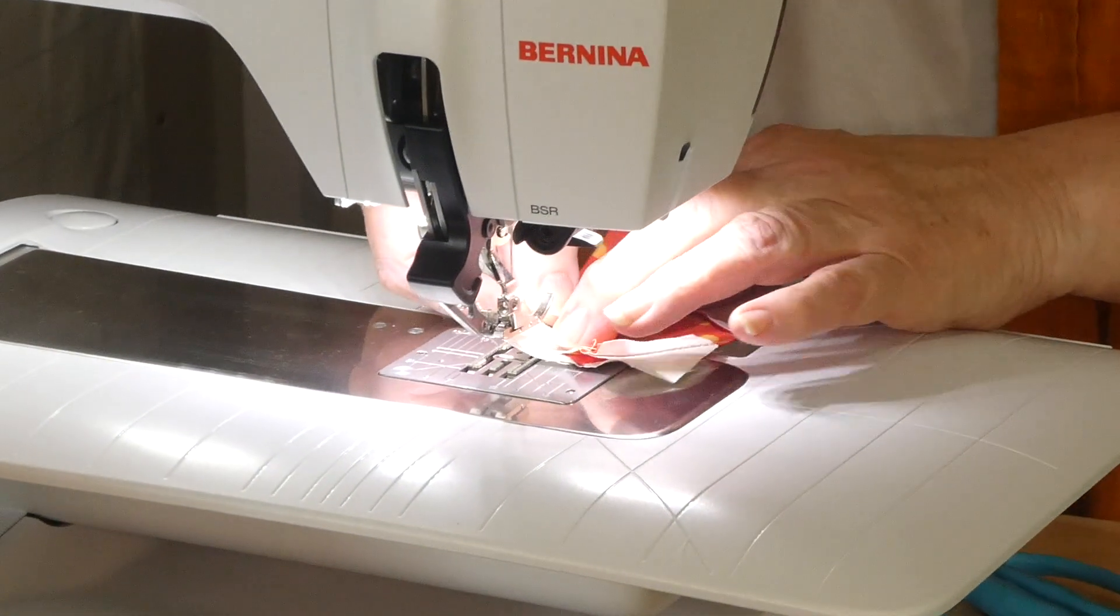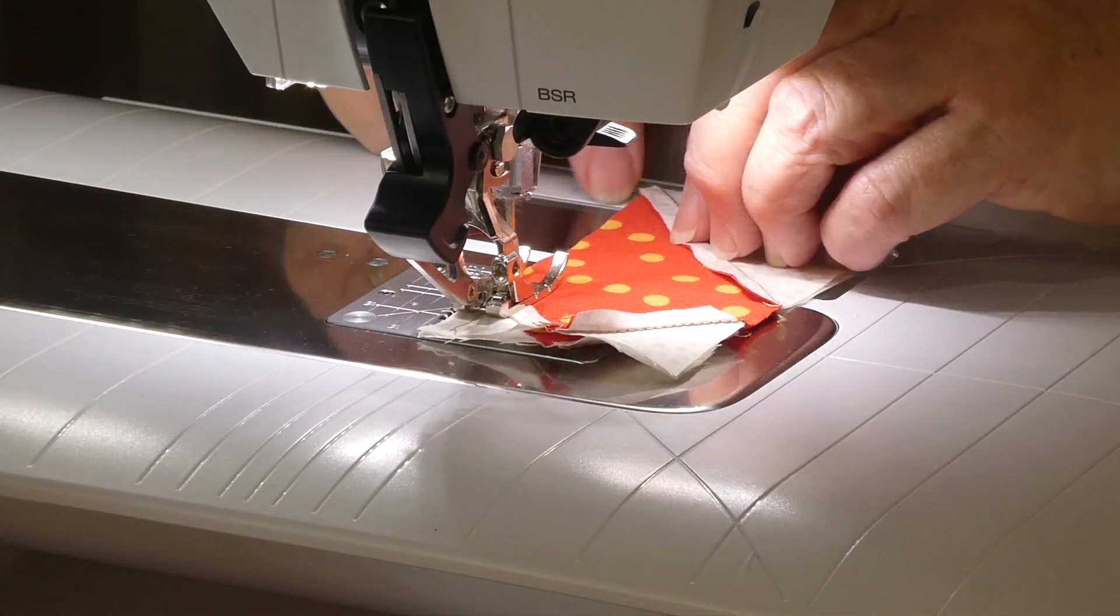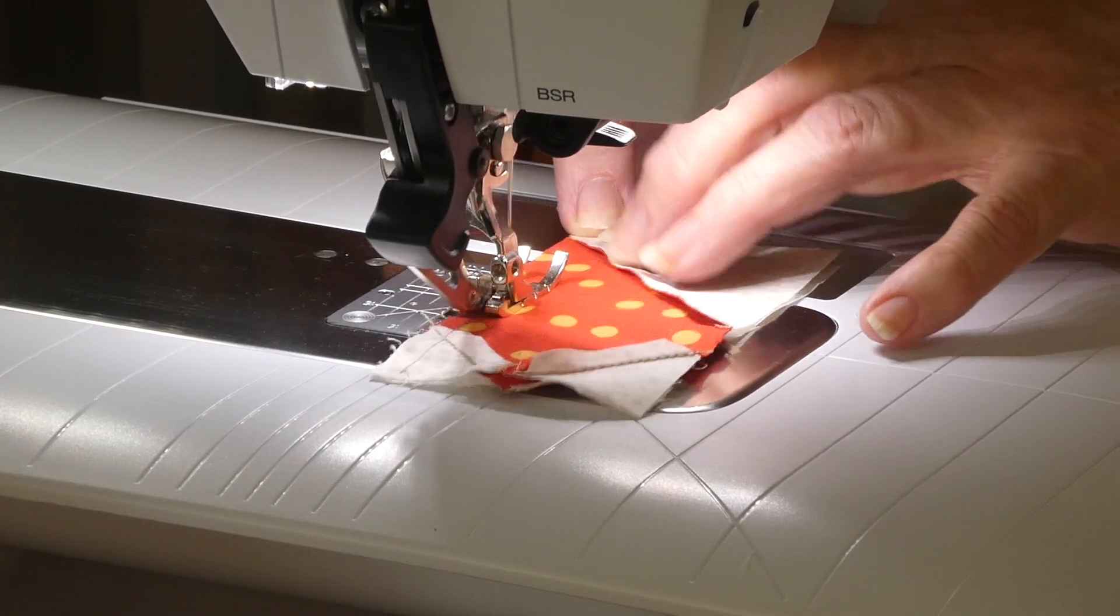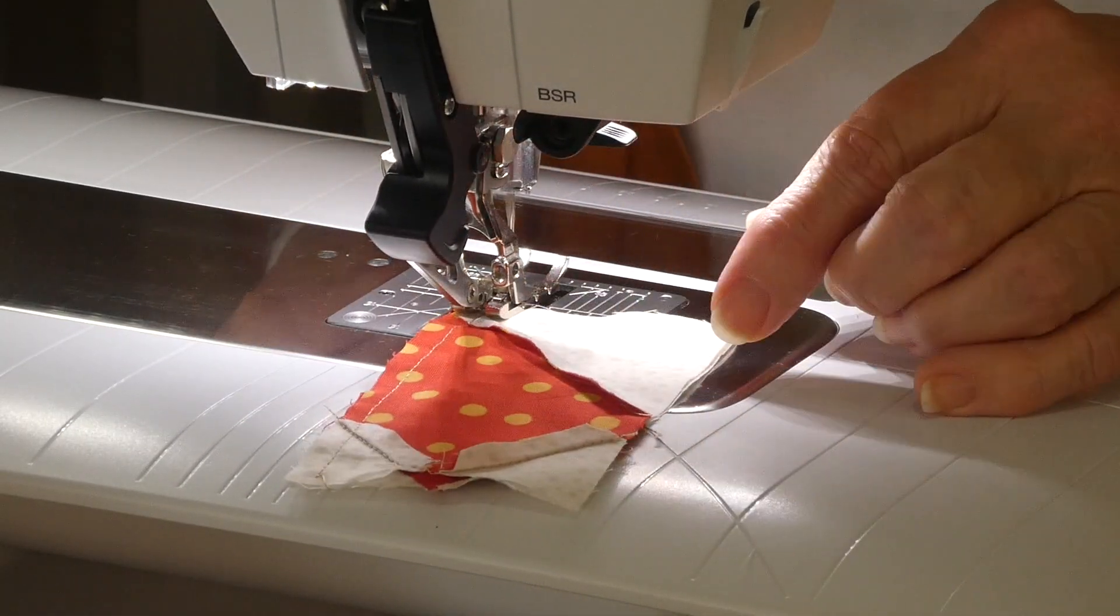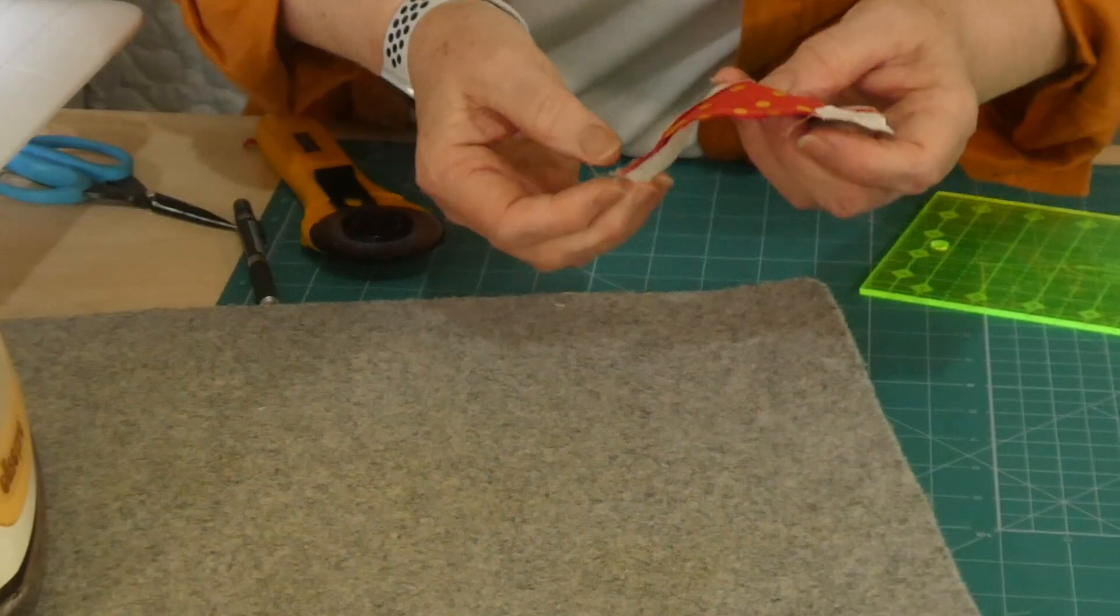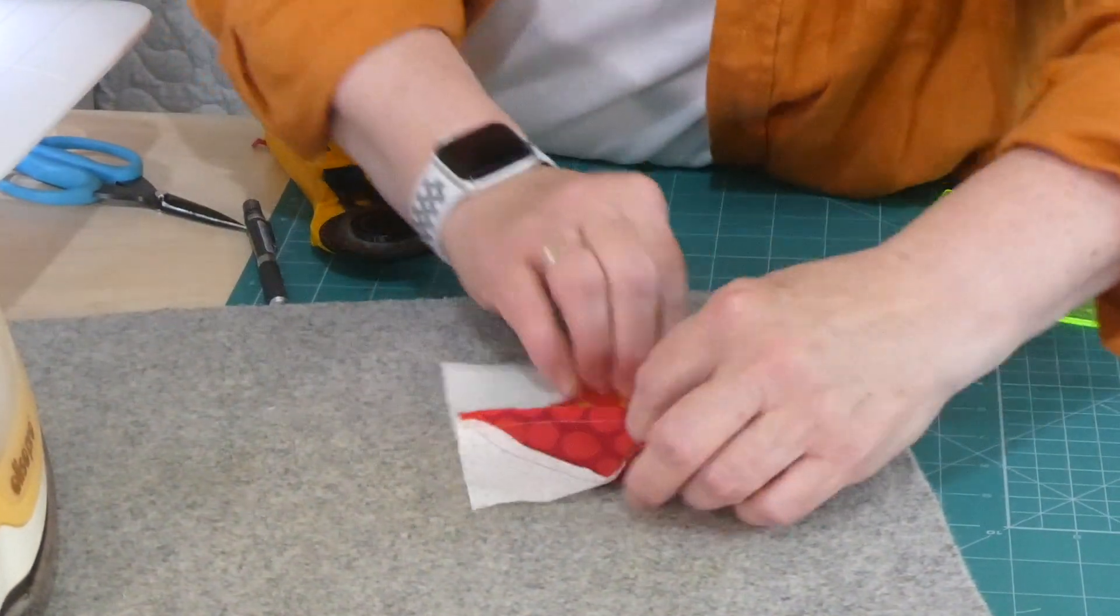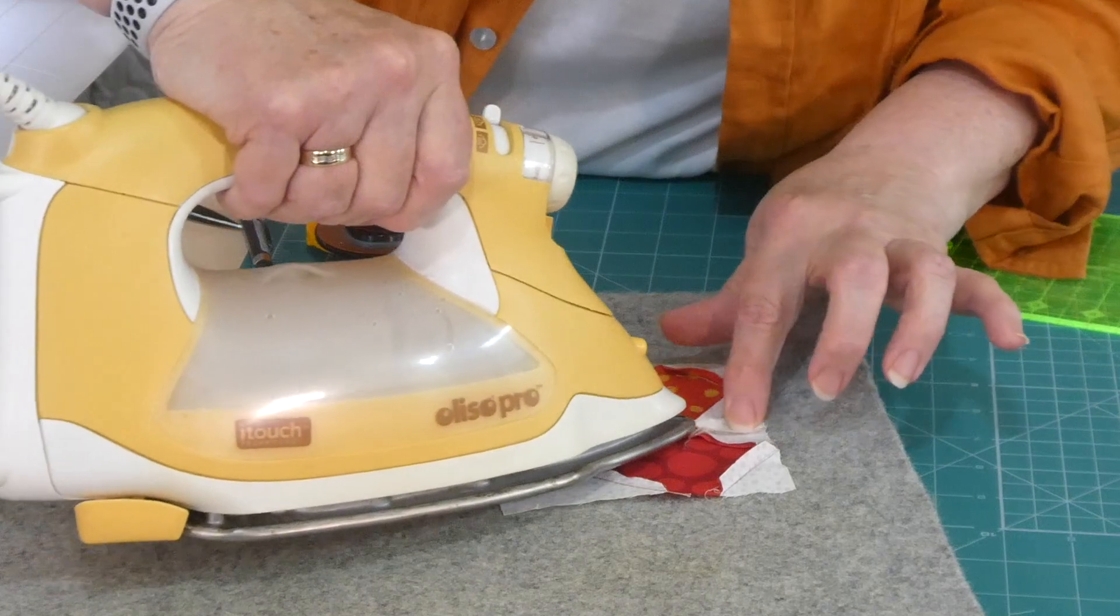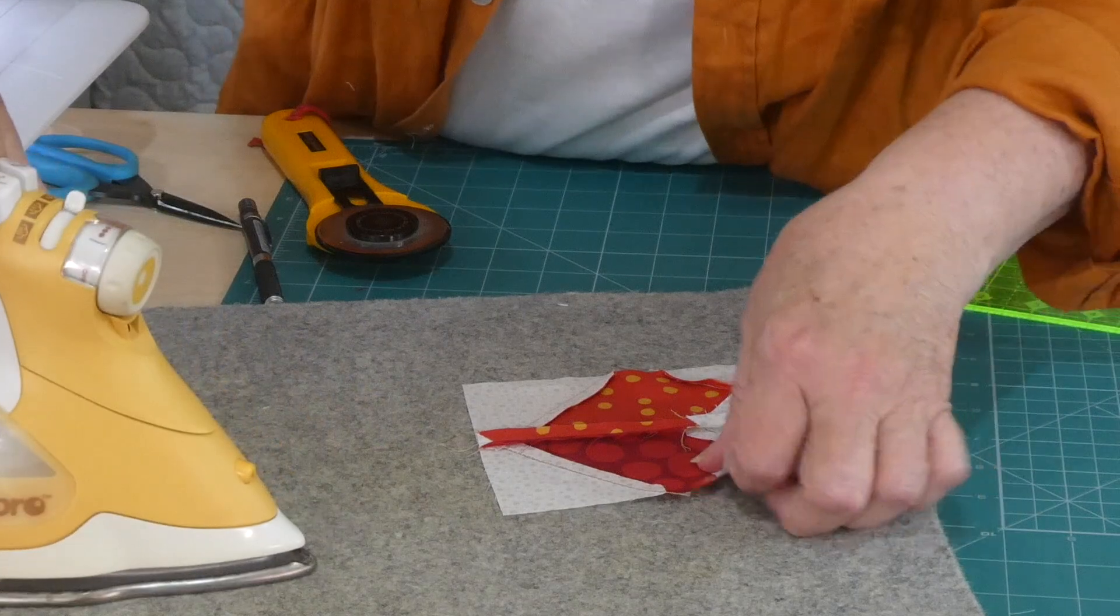So we're just going to join that center seam now. Just make sure our seams sit flat. And then we're actually going to press that seam open. Because of those seams coming in to meet, rather than having a bulk going one way, I found it sits a whole lot better if we press this seam open. Just keep an eye on those other seams that they don't get caught up in the pressing process.